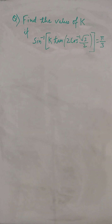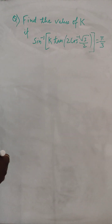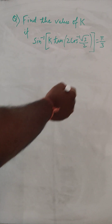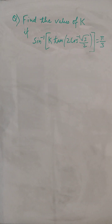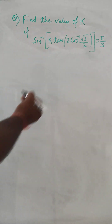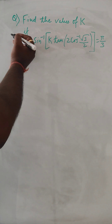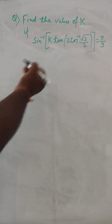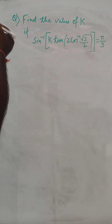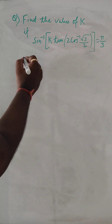Hello, so we are going to find the value of k in this question, where sin inverse of k times tan of 2 cos inverse of under root 3 by 2 is equal to pi by 3. So let's start doing this — we can bring sin inverse to this side, and sin inverse and sin will get cancelled.